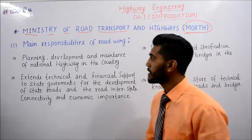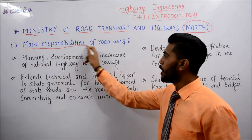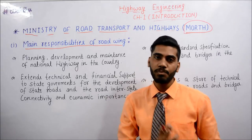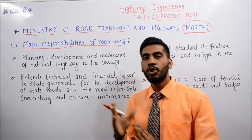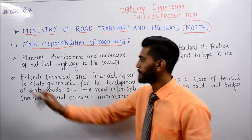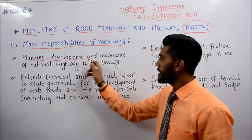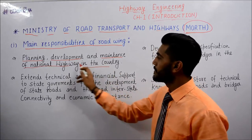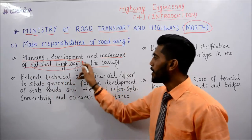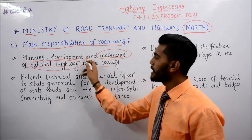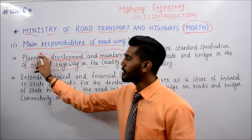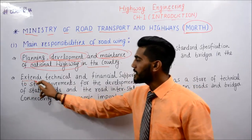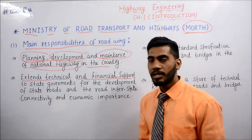अब जानते हैं main responsibilities of Road Wings. Road Wings की जिम्मेदारी है: planning, development and maintenance of national highways in the country. यानि देश के अंदर national highways को plan करने की, उनका विकास करने की, और उन्हें maintain करने की जिम्मेदारी Road Wings की है.